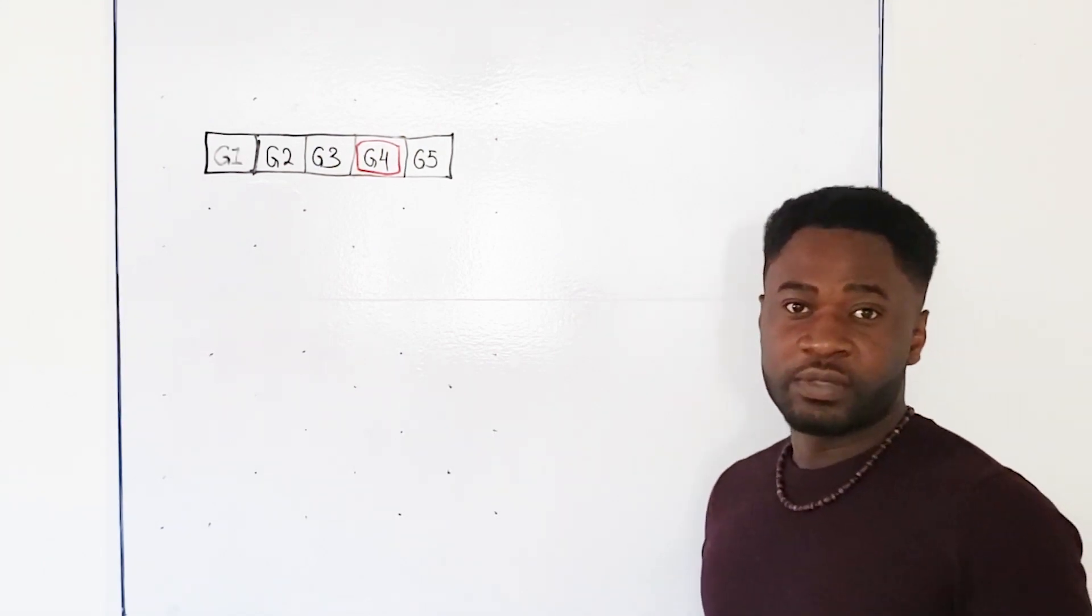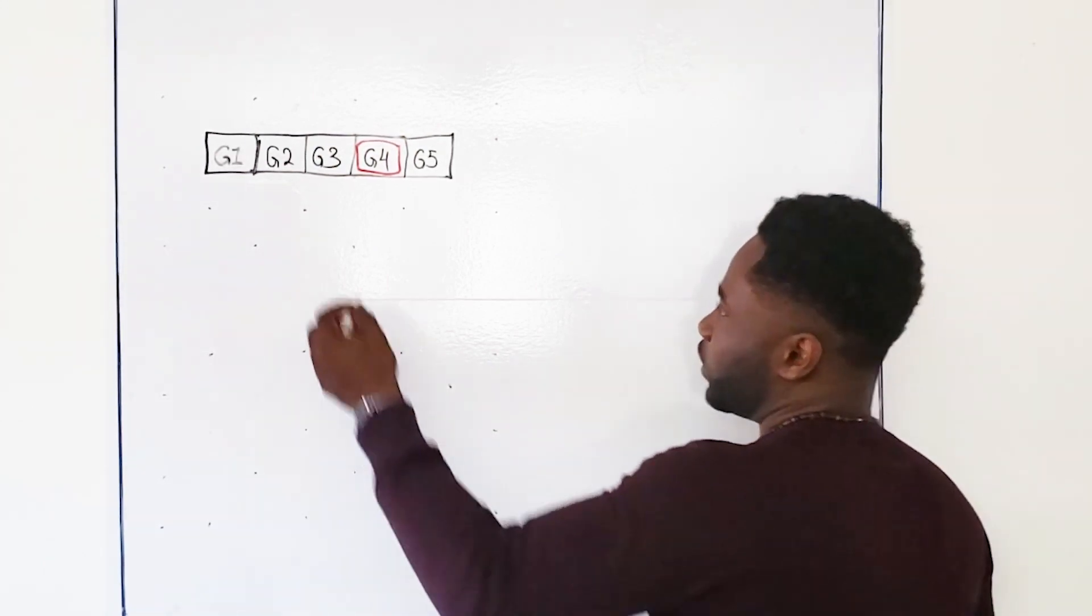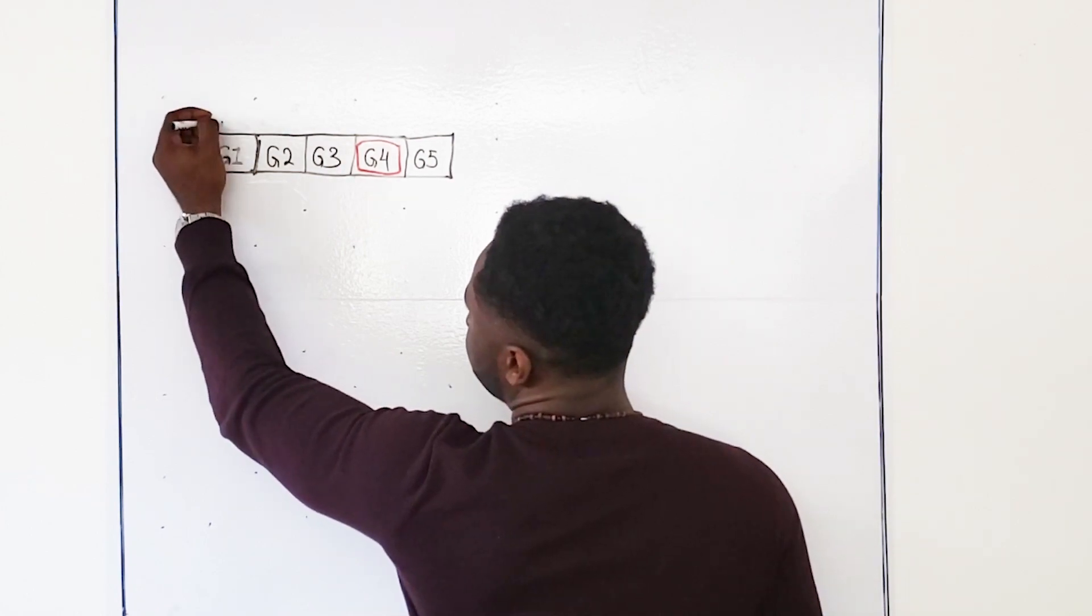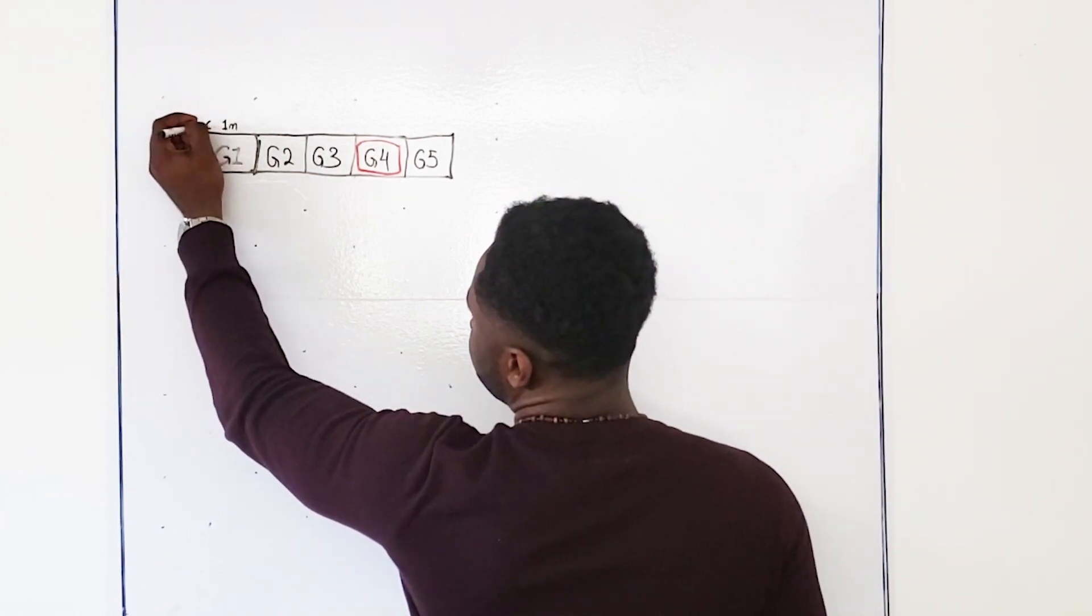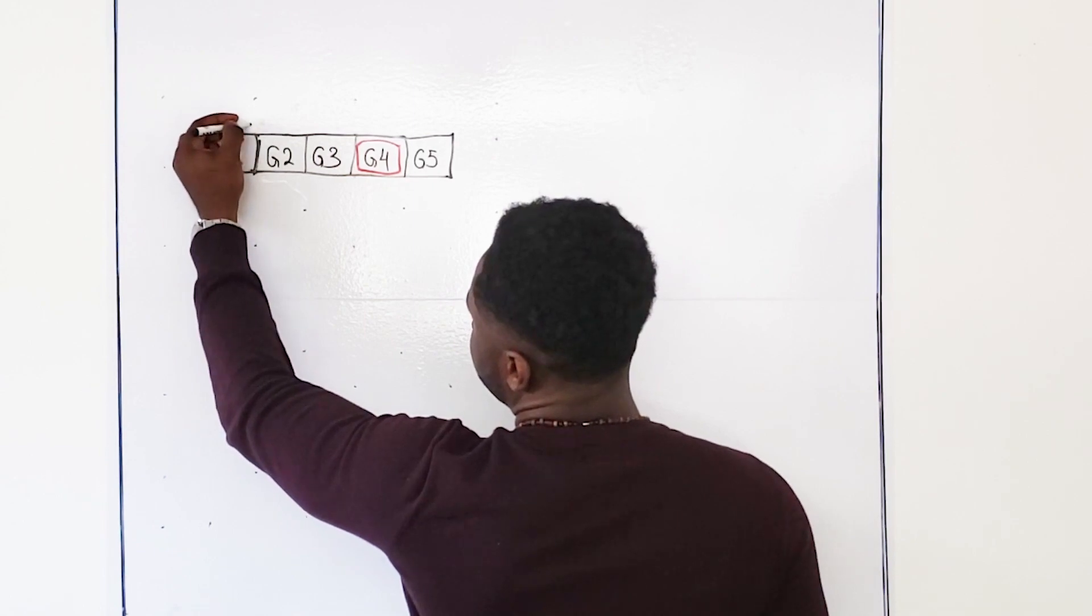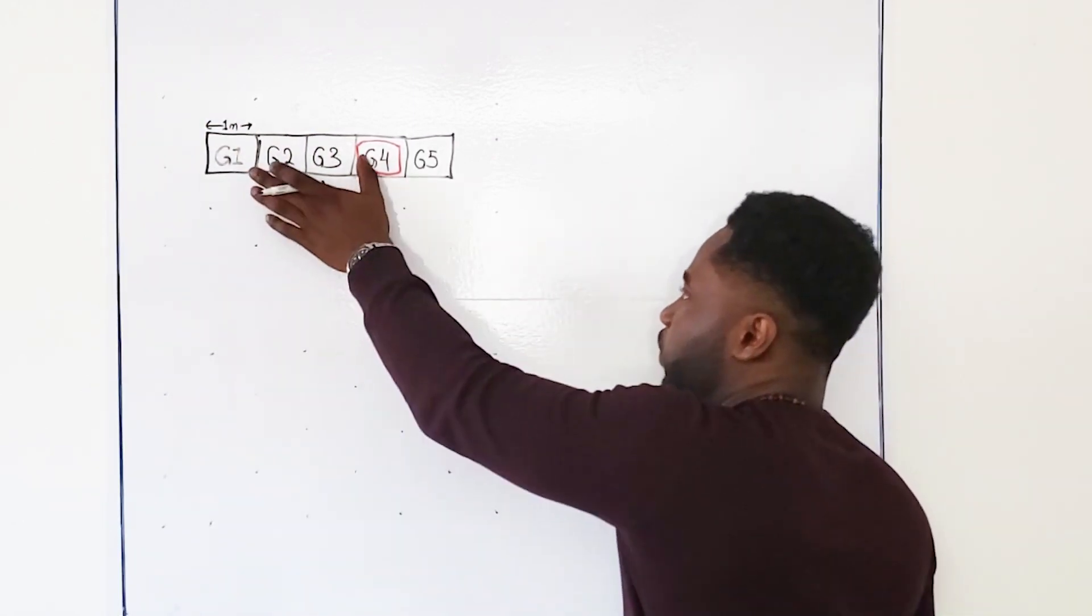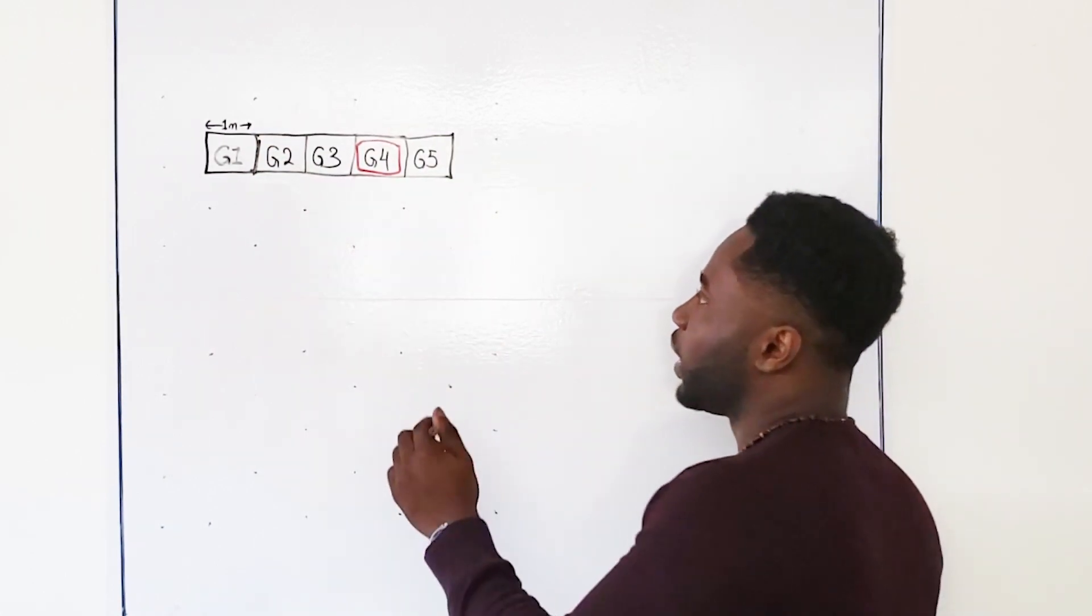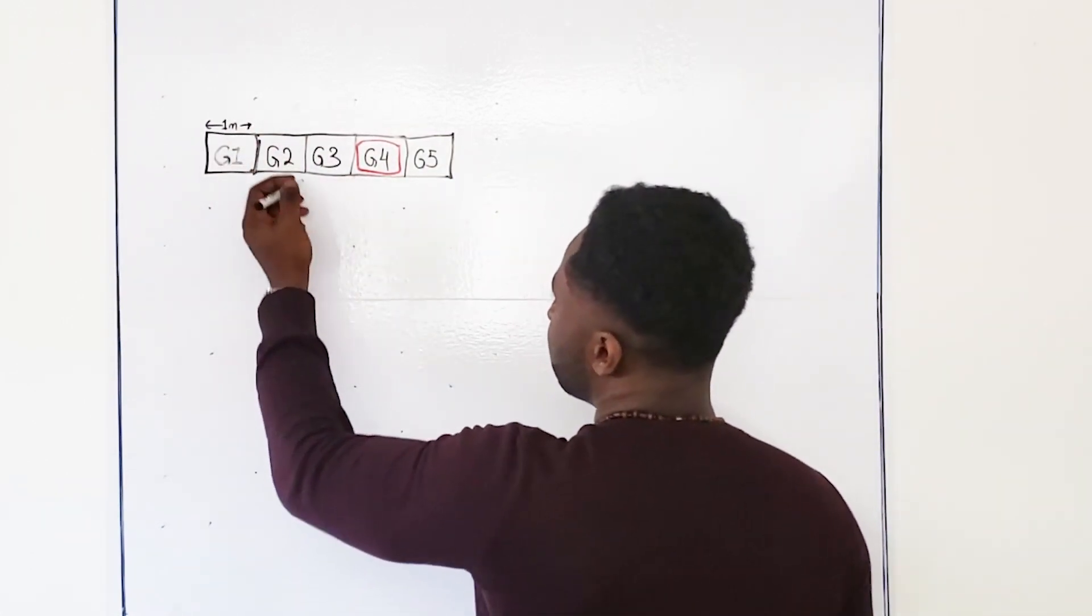In order to do that, we can just do some simple calculations here. Suppose the distance between each seat is about one meter. So from here to here, it's about one meter. So then if you wanted to find the location of guest four, all we will have to do is multiply this by four.